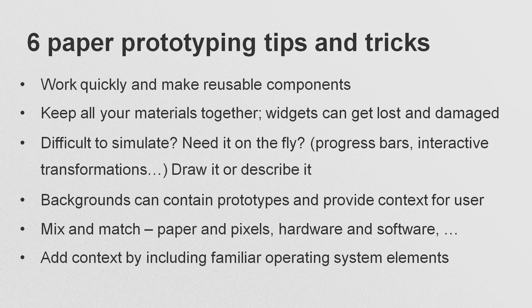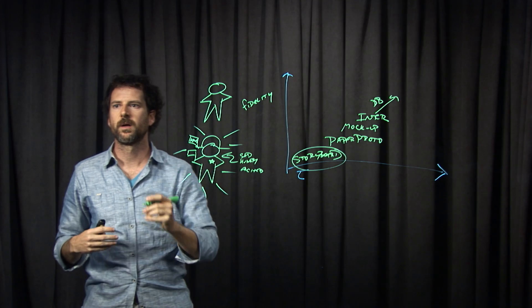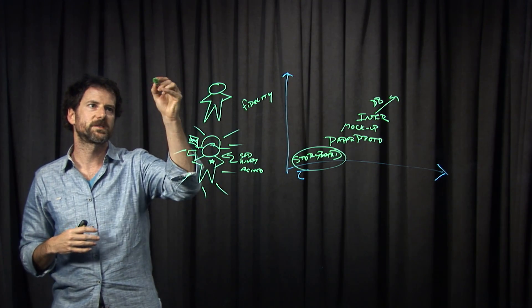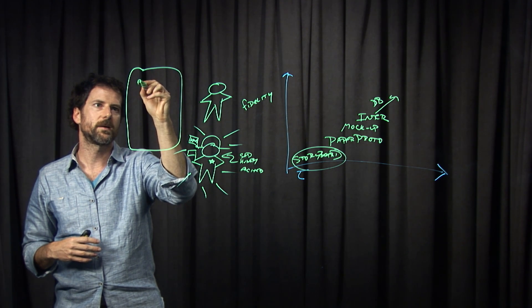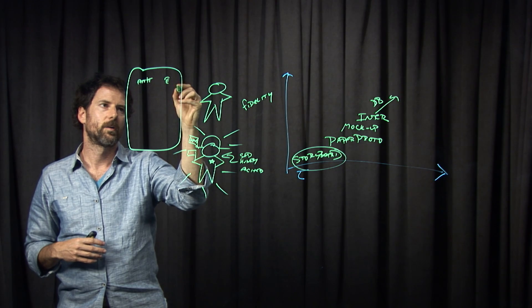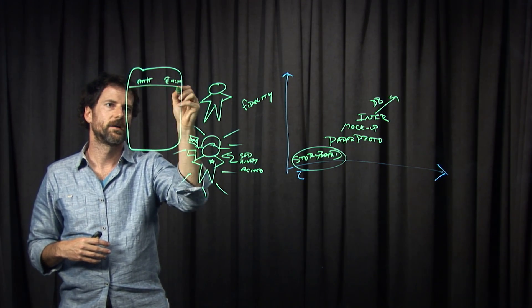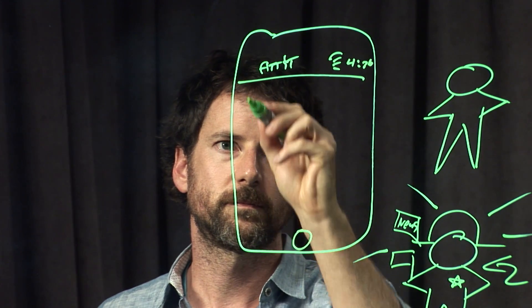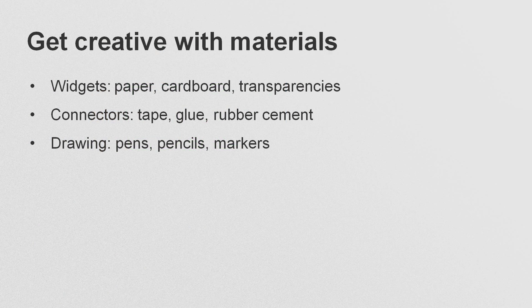Anything you want. And to help people get in the mindset of thinking of this as a real system, you might add in familiar operating system elements. So if I've got my mobile phone UI, I might add in the carrier, Wi-Fi, and the time — stuff like that — to make it seem more real. Transparencies are awesome for being able to have widgets on this. You can use any materials you want; there are really no rules here. A lot of it is about you and your team having fun.